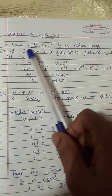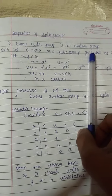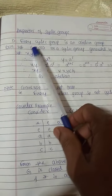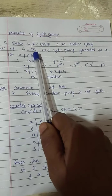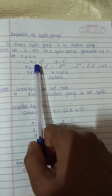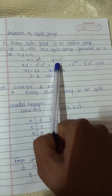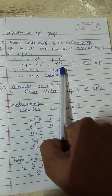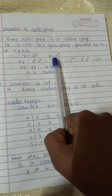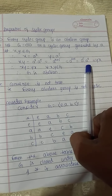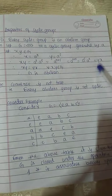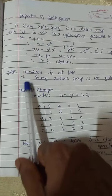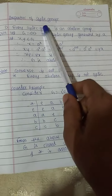Properties of cyclic groups: Every cyclic group is an abelian group — this is very important. Every cyclic group is abelian, but the converse is not true; not every abelian group is cyclic. Let G = ⟨A⟩ be a cyclic group generated by element A. Take X and Y as elements of G. X can be written as A power R and Y as A power S. Then X times Y equals A^R times A^S equals A^(R+S) equals A^(S+R) equals A^S times A^R equals Y times X. Therefore XY equals YX for every X, Y in G, so G is abelian.